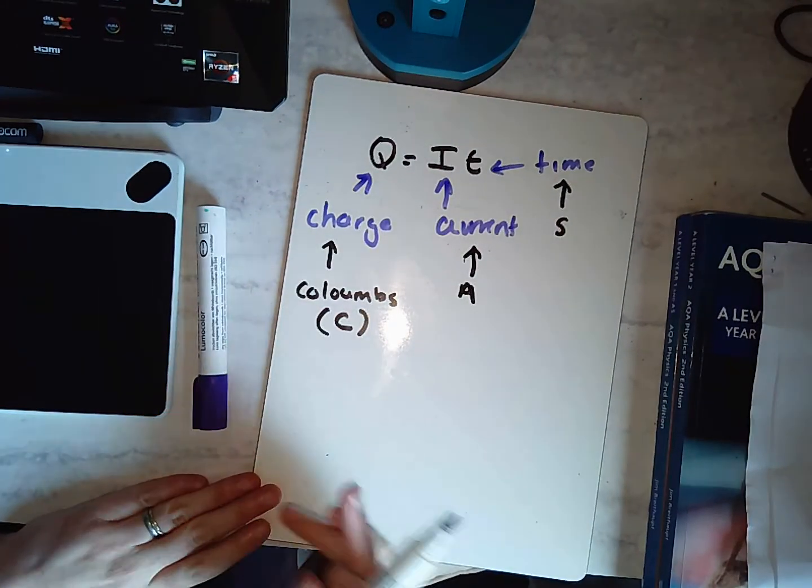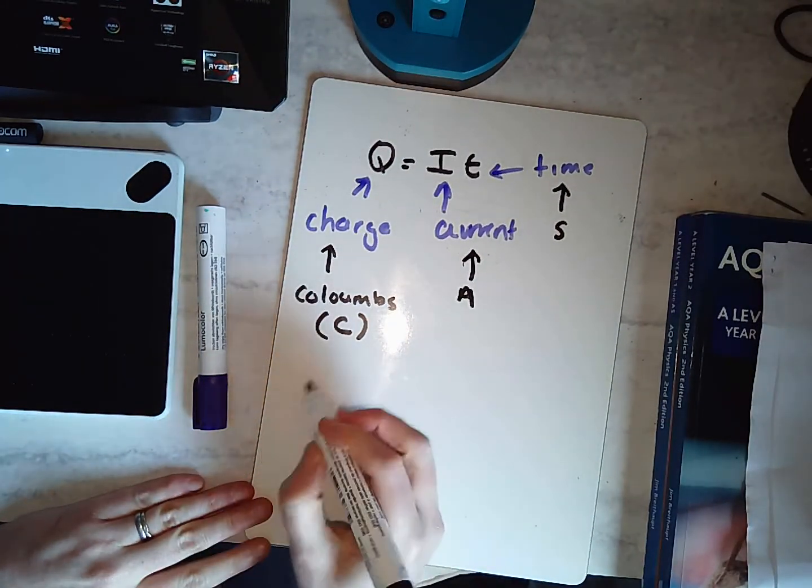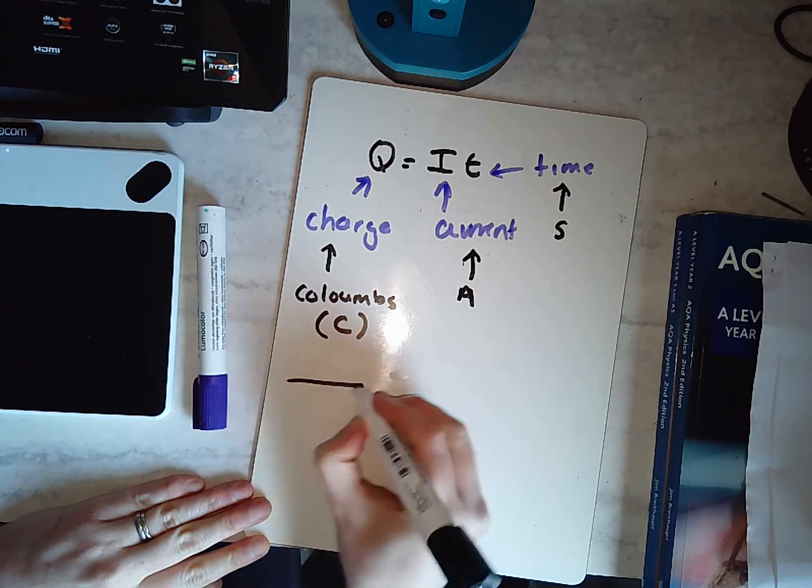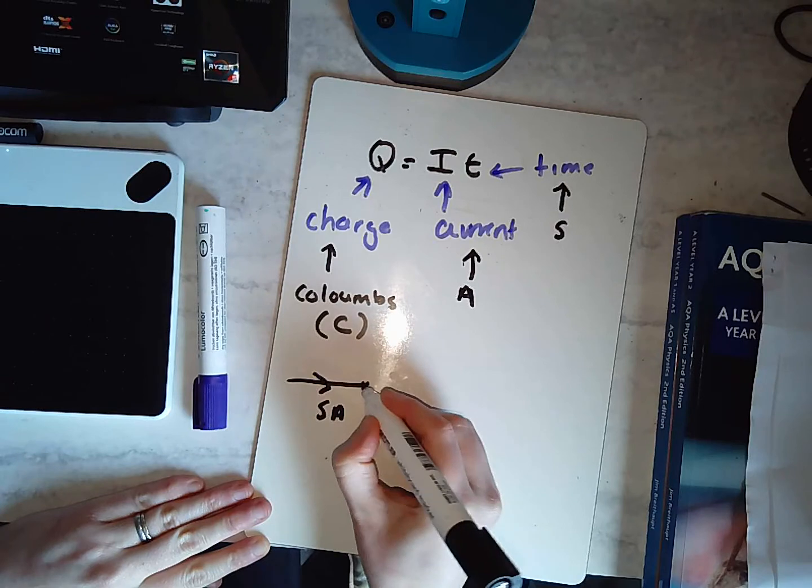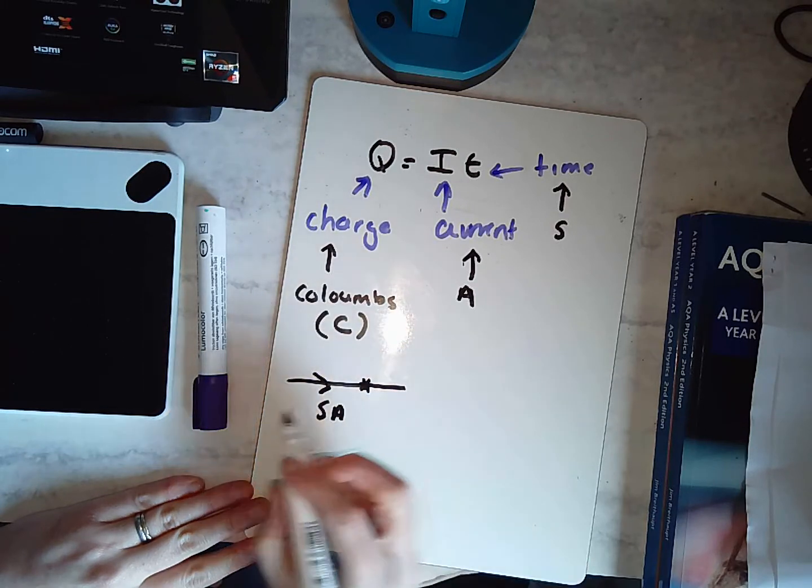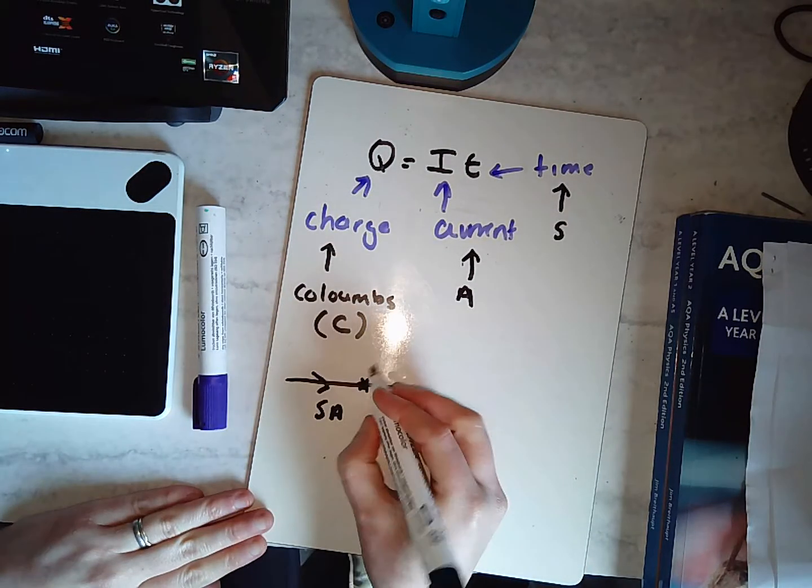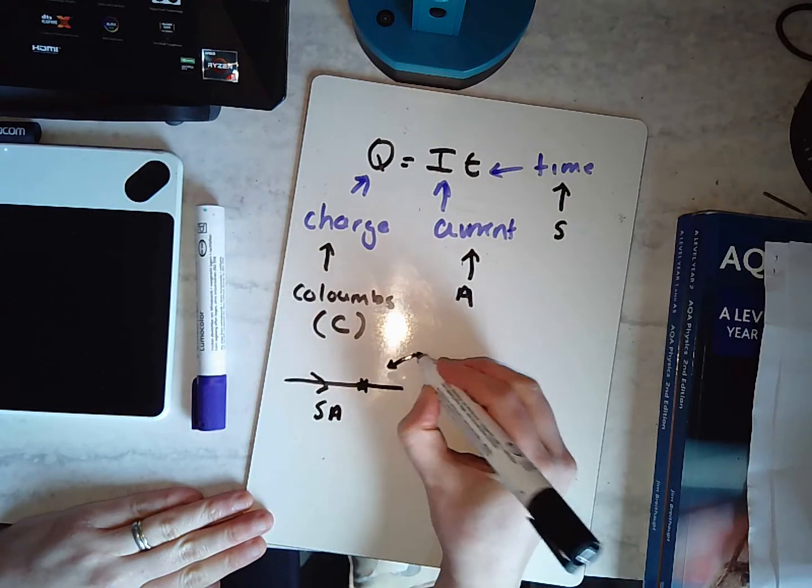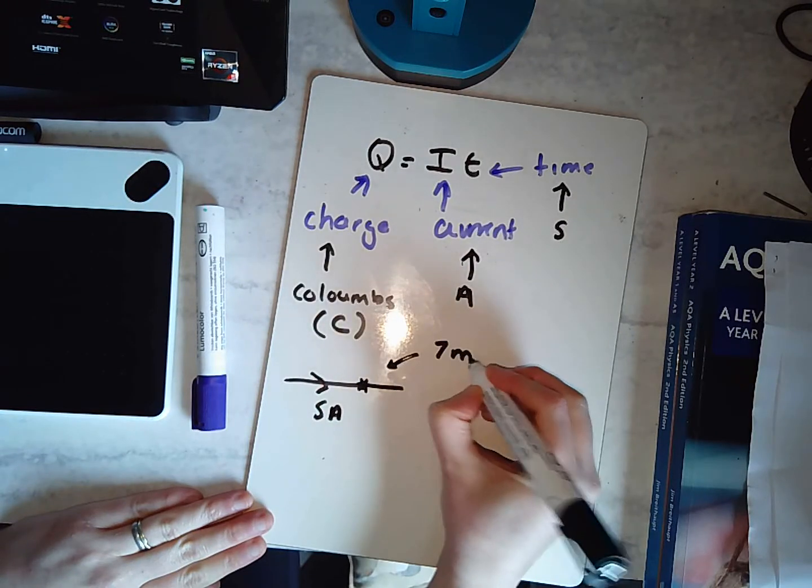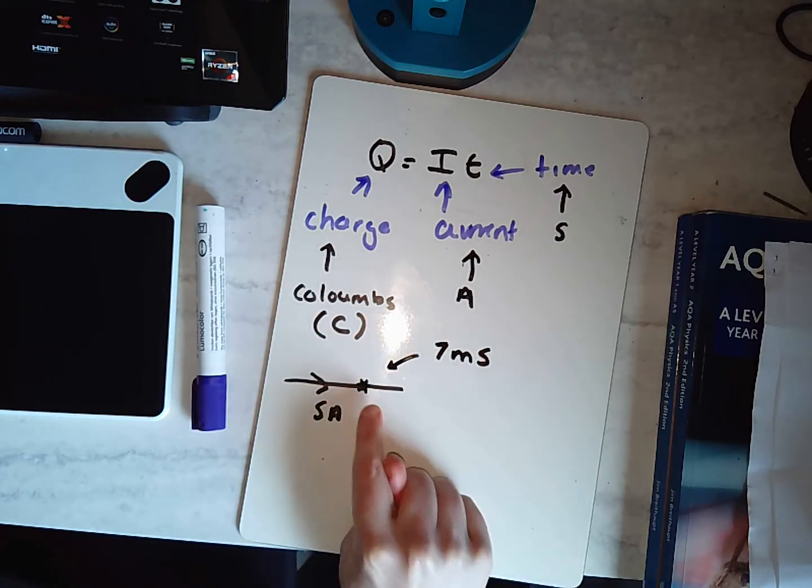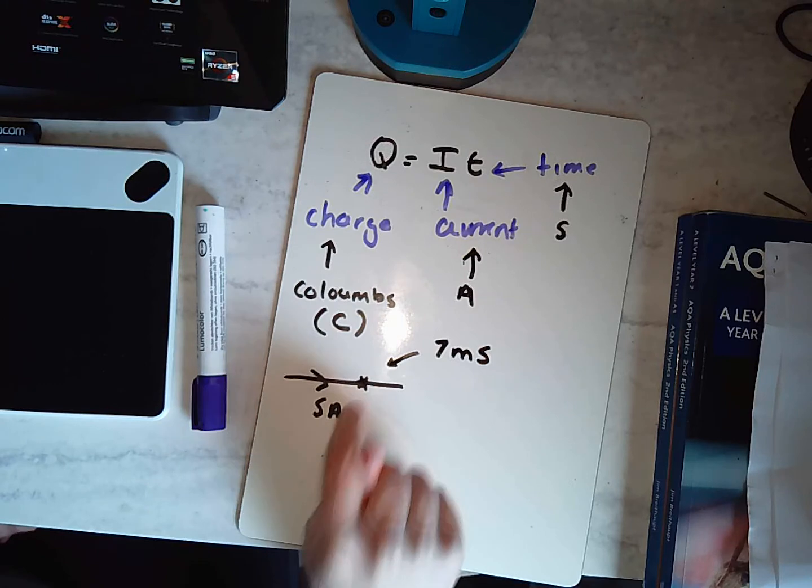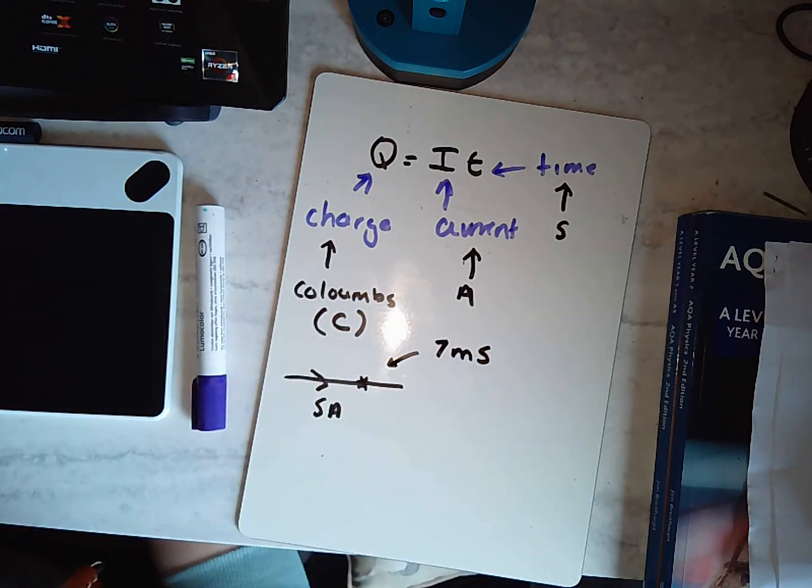So why don't we go at using this? Let's say that I had a wire, and inside I had five amps, so five amps is passing this point here, and I want to know how much charge passes this point in seven milliseconds. So this is the current, that is the time, and I want to know how much charge passes here in five milliseconds. So pause the video and have a quick go.